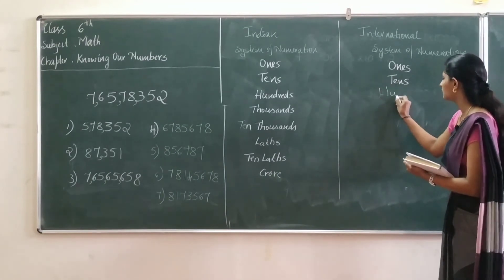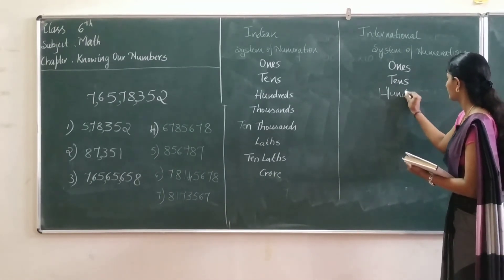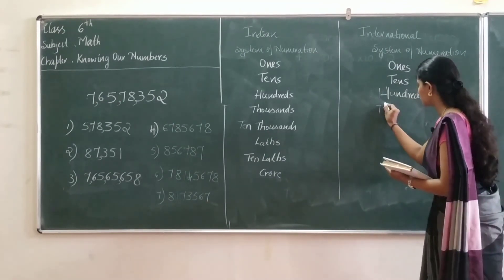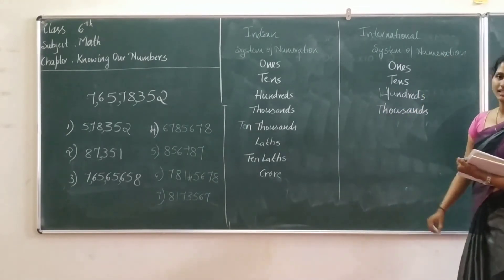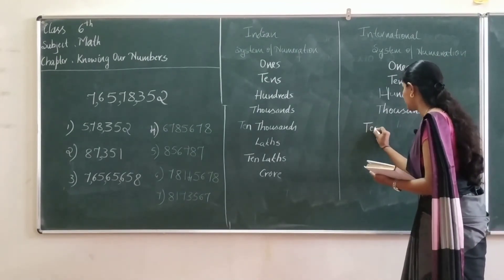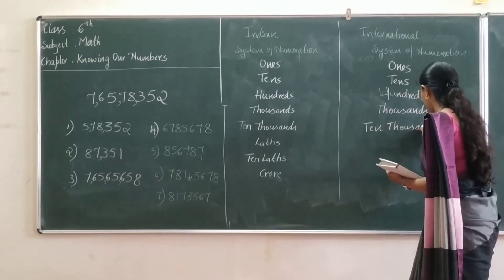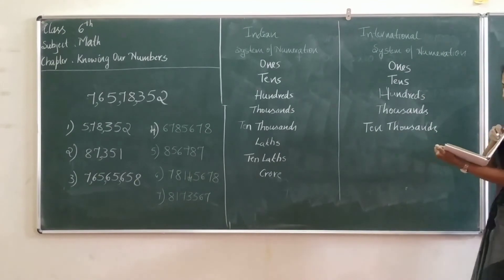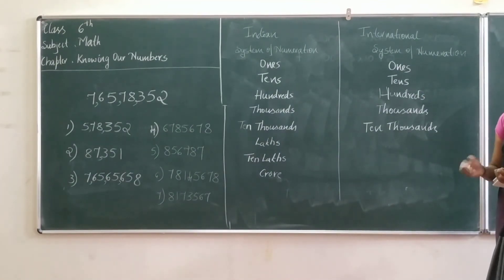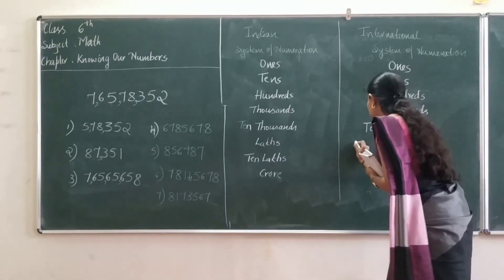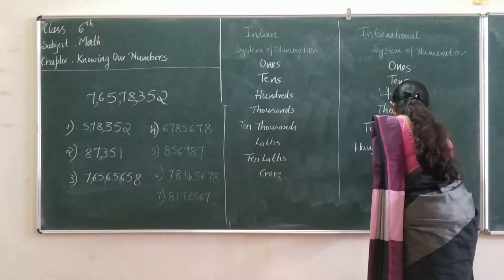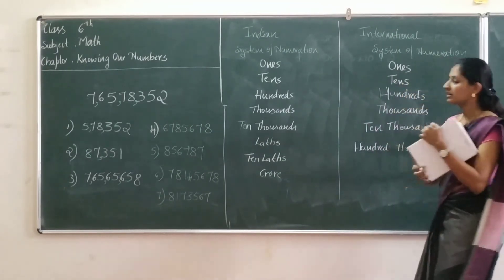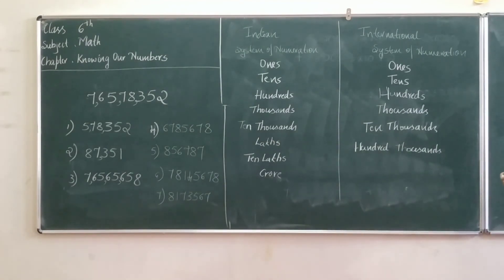Then comes hundreds, thousands. After ten thousands, in the Indian system we say lakhs, but in the international system we say hundred thousands. Then, where we say ten lakhs in Indian, internationally we say millions.